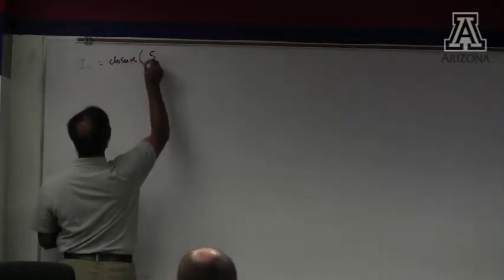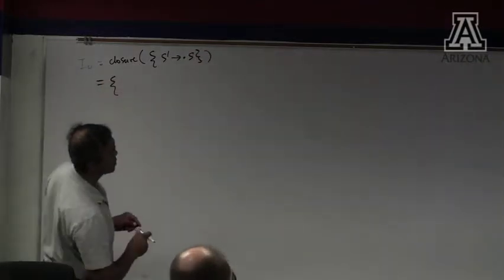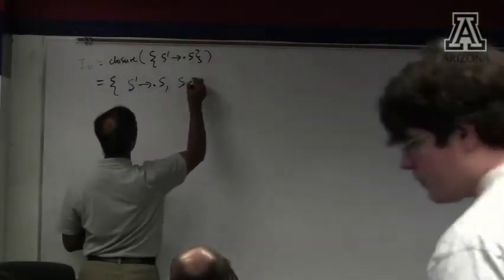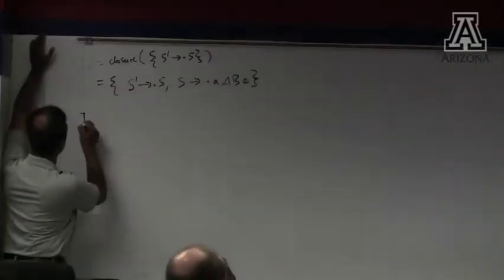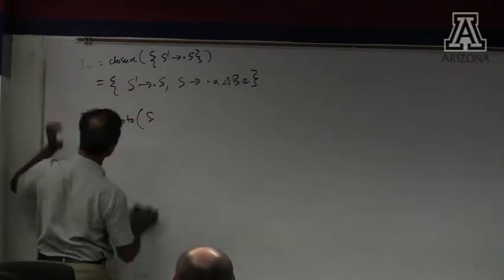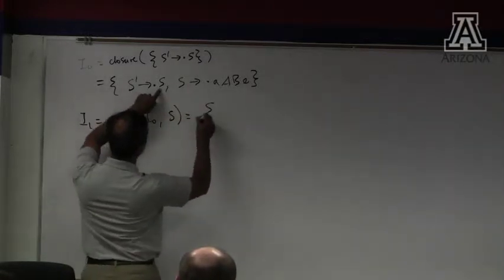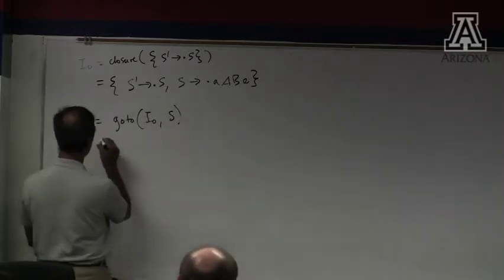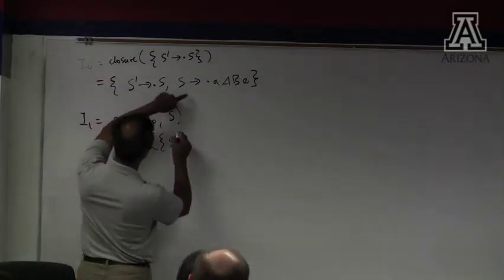The closure of S-prime goes to dot S — that's equal to... I1 is go-to from I0 on S, and that is the closure of walking the dot across.